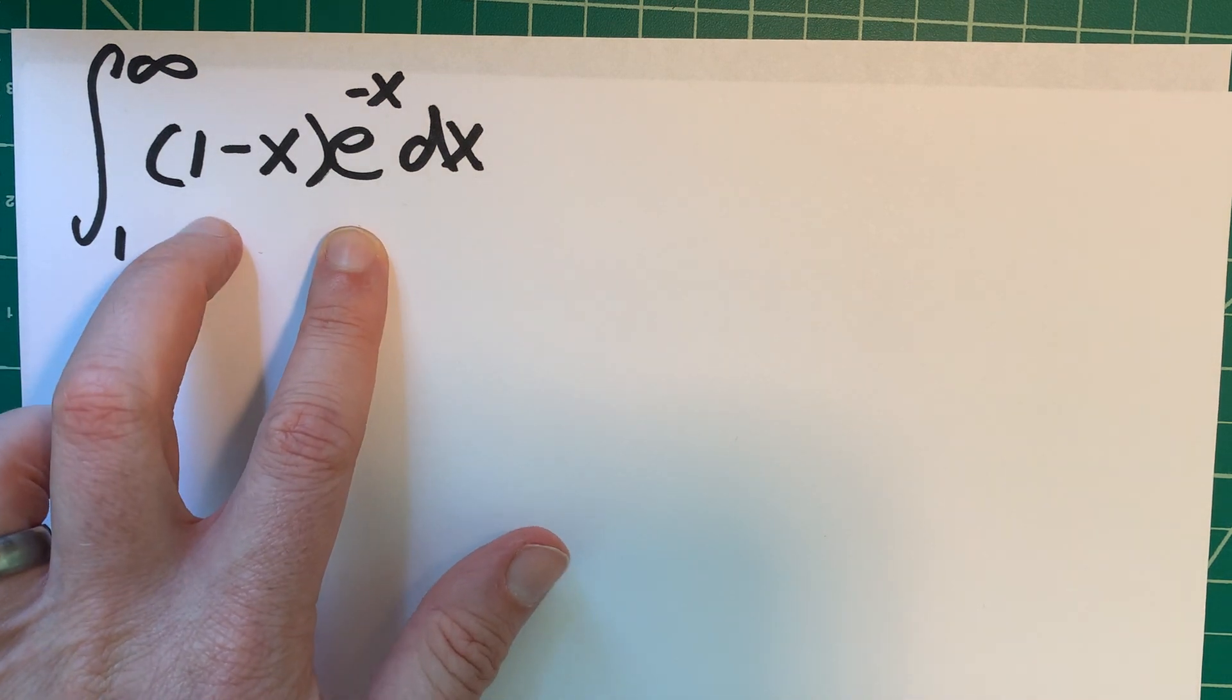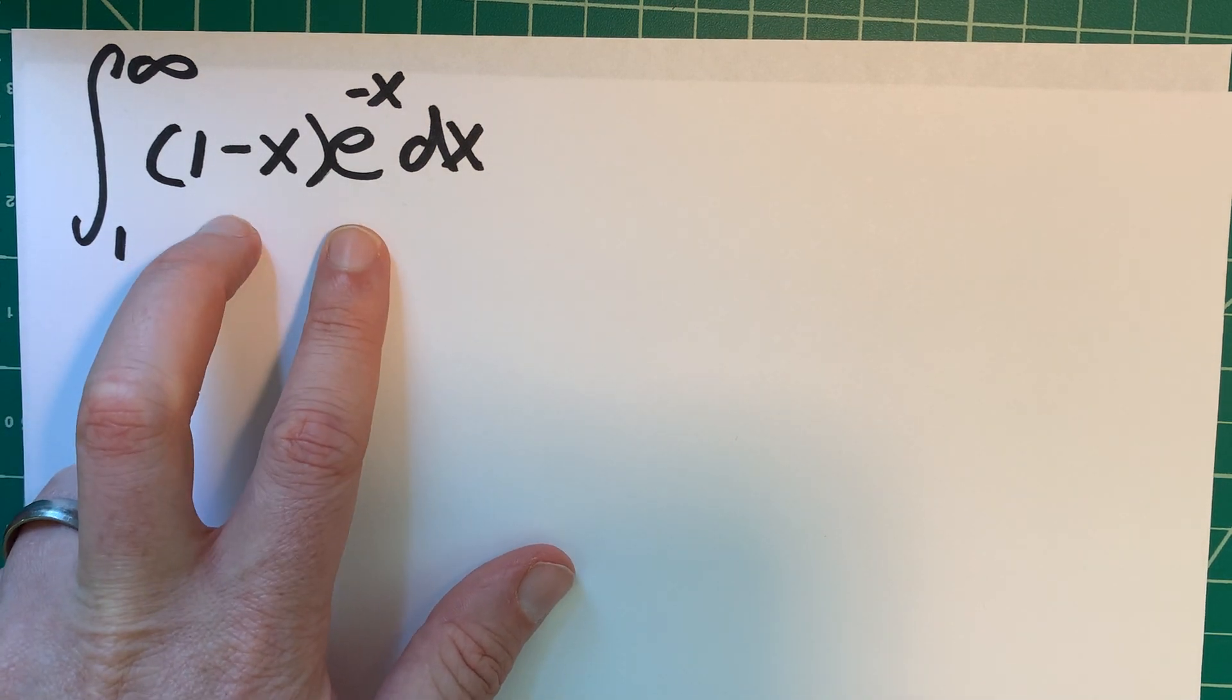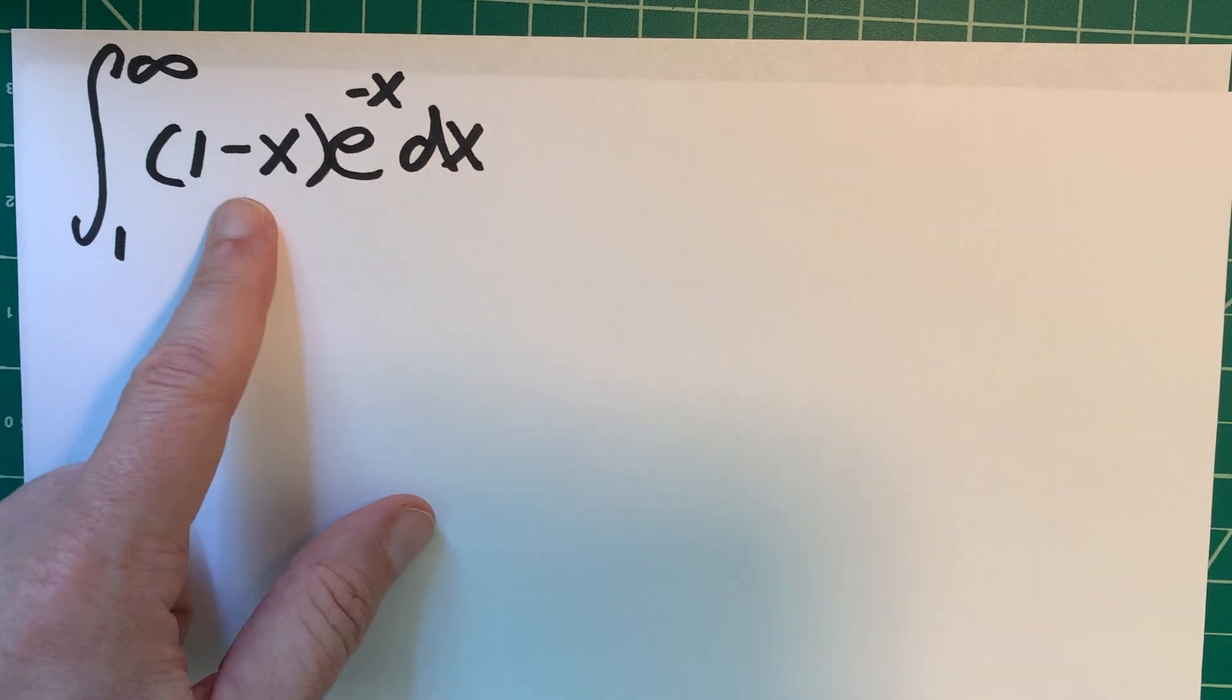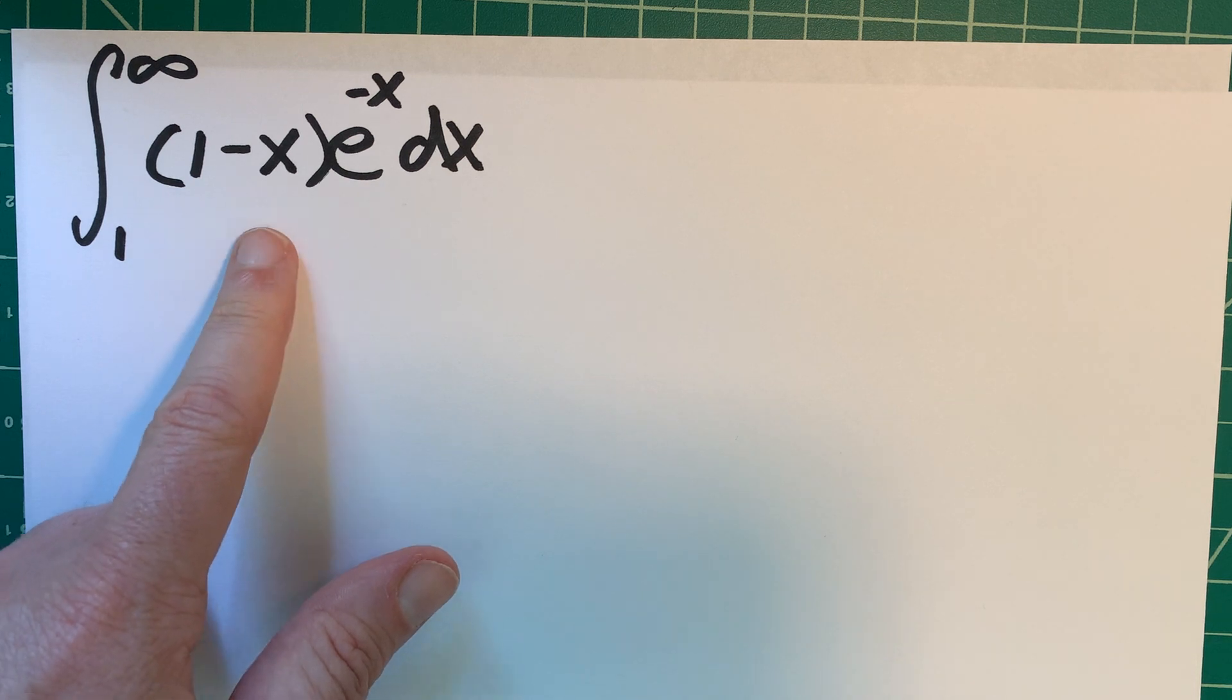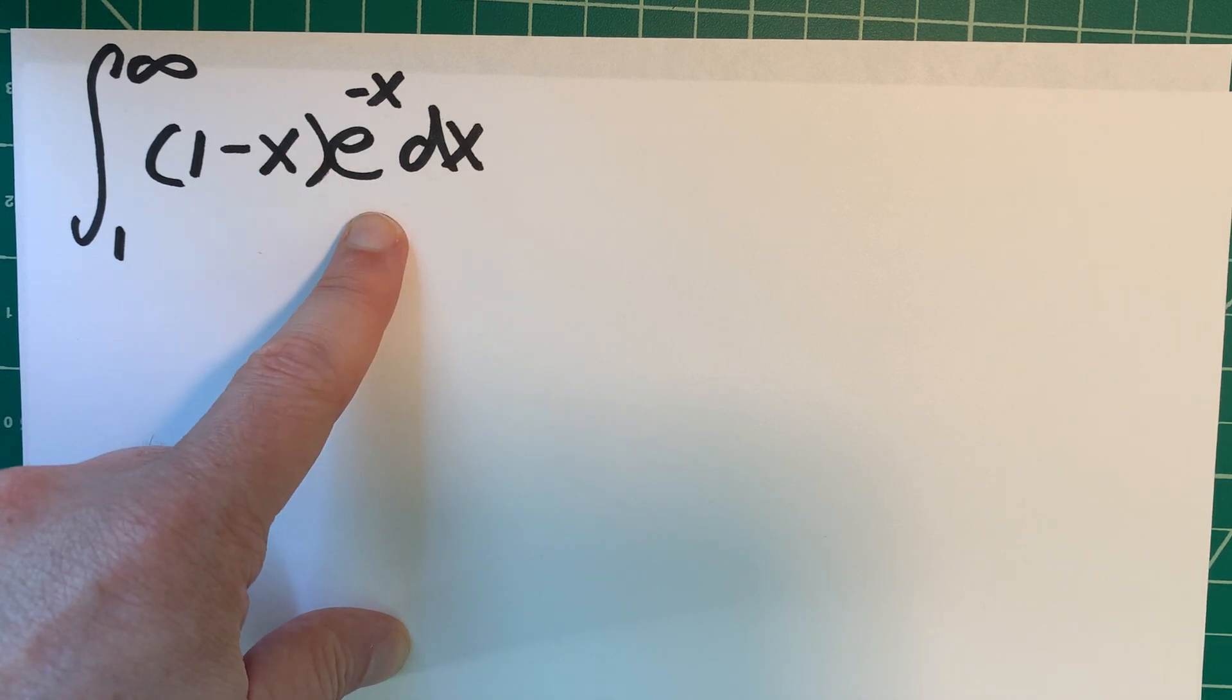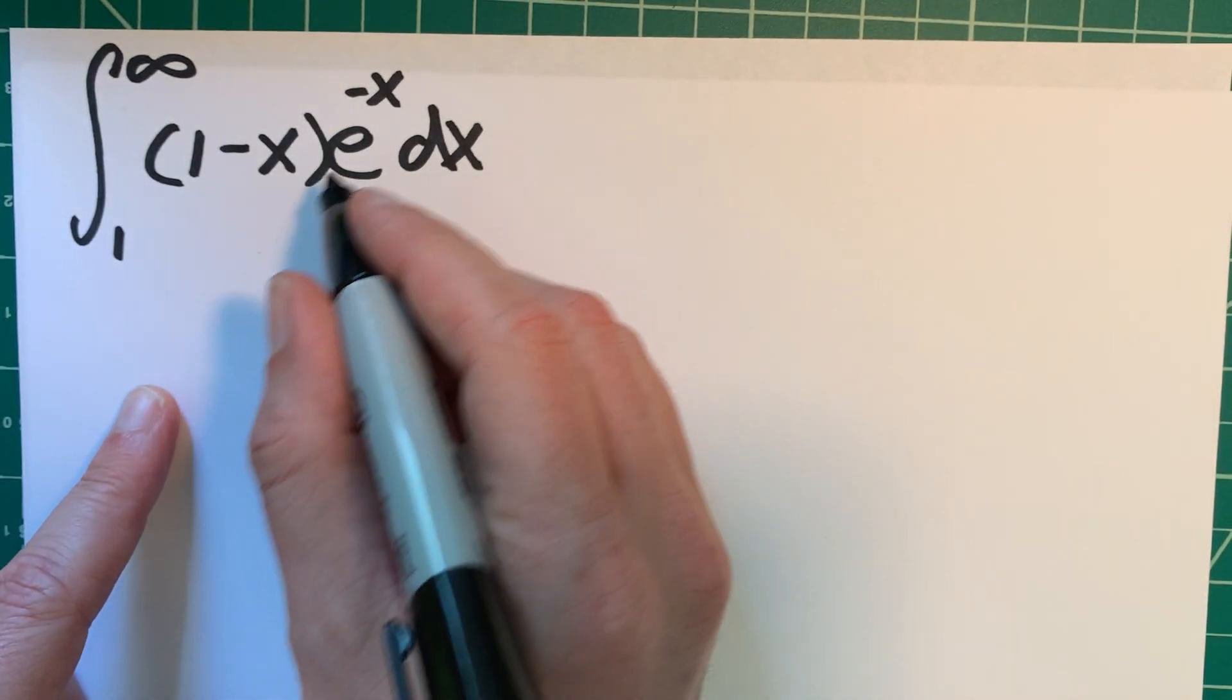So we see that we could split this up as two functions, and I think that's the way to go. Even though we have e to the negative x, and I see I have a negative x here, I think just u substitution won't be strong enough. So I'm going to try a by-parts method here.